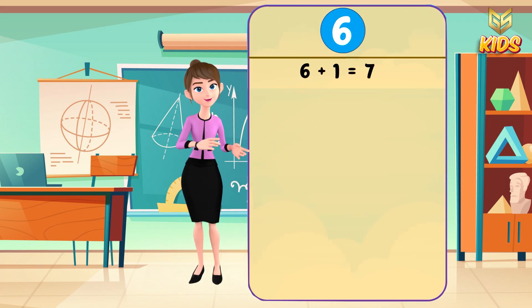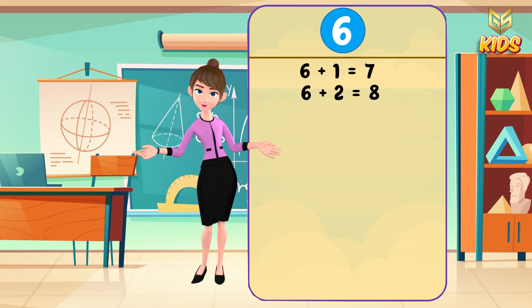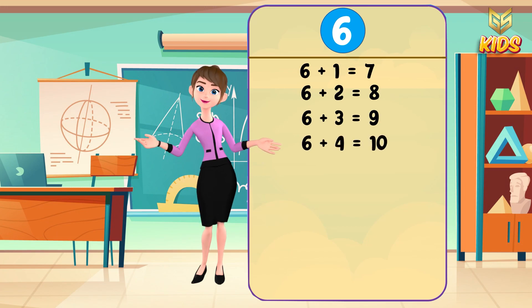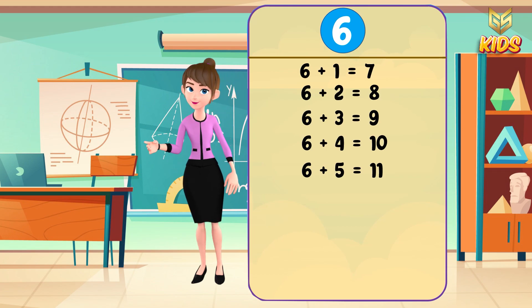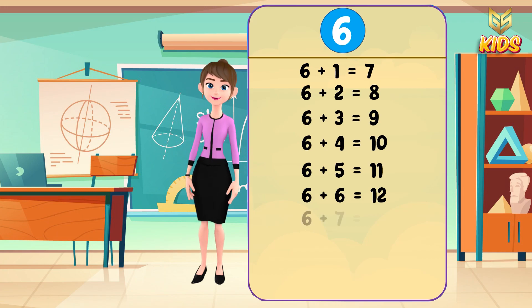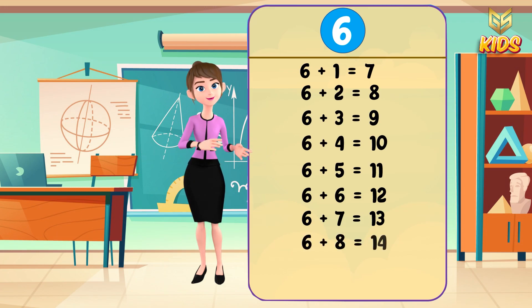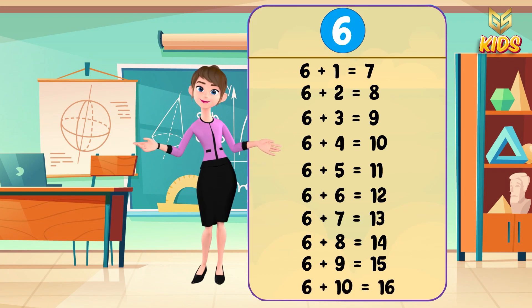6 + 1 = 7, 6 + 2 = 8, 6 + 3 = 9, 6 + 4 = 10, 6 + 5 = 11, 6 + 6 = 12, 6 + 7 = 13, 6 + 8 = 14, 6 + 9 = 15, and 6 + 10 = 16.